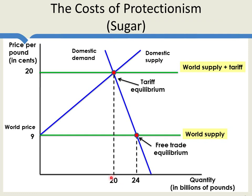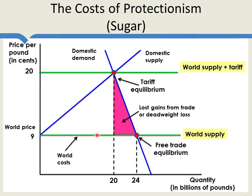So what are the costs of the tariff? First, the loss of gains from trade. The demand curve can be read as willingness to pay for sugar by domestic consumers, and the world supply curve as the cost of producing sugar. Consumers are willing to pay more than world suppliers require, so there are gains from trade. With the tariff, however, consumption is reduced, and those lost gains from trade are given by this purple area.